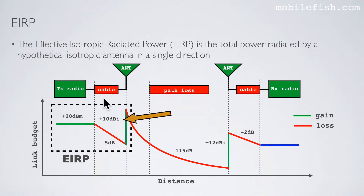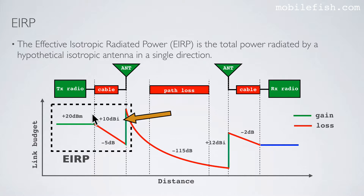We only focus on these three values when calculating the EIRP — we don't use the other values. The antenna gain must be expressed in the unit dBi. In this example, the EIRP is 20 minus 5 equals 15, plus 10 equals 25 dBm.